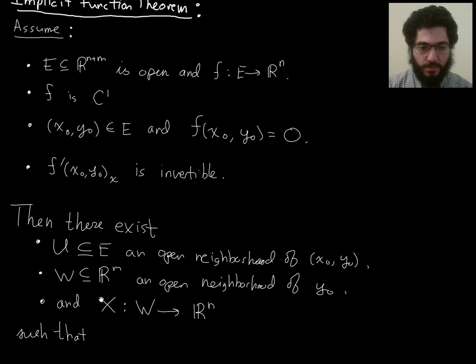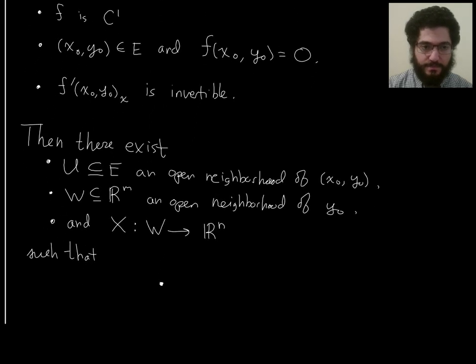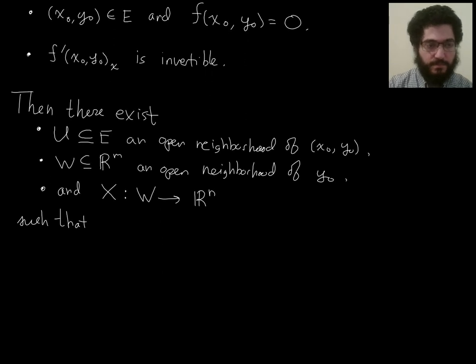So, conclusion, there are U, W, and X such that. Now, let's fill in the rest here. So, I'm going to write down three conclusions. The first conclusion is, for any... So, I'm going to describe what property this function capital X, the mapping from little y's to little x's, should satisfy. For any little y in W, so the domain of capital X, we have, first of all, if you look at X(y) and little y, that pair, that (x,y) pair, that's going to be in U.